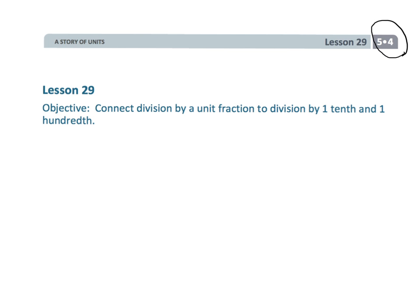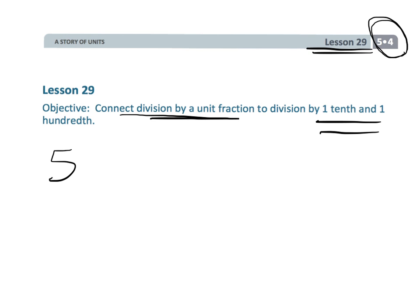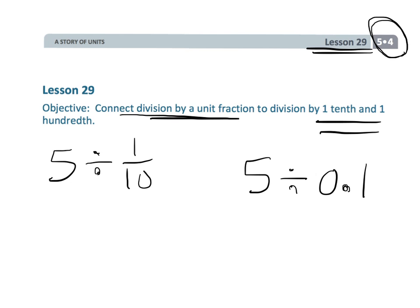This is fifth grade module 4 lesson 29. In this lesson we are connecting division by a unit fraction to division by tenths and hundredths in terms of decimals. The idea is we're relating the concept of five divided by one-tenth, which our students are kind of comfortable with, and connecting that to five divided by 0.1. That's the point of this lesson.